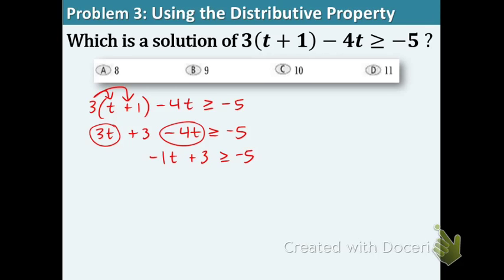Two step equation now. Let's subtract the 3 to the other side. Negative 1T is greater or equal to negative 8. Now we have a negative involved in front of the T.